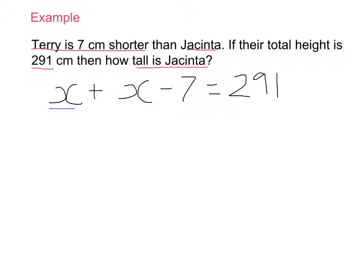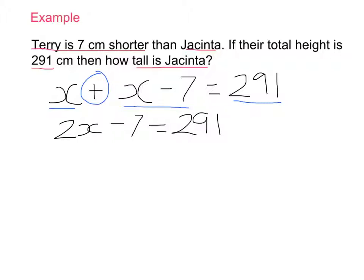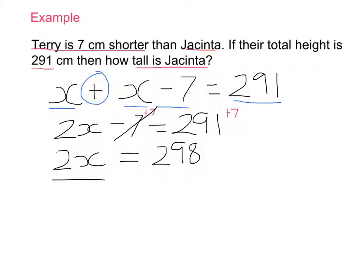Simplifying: X plus X is 2X, so 2X minus 7 equals 291. Add 7 to both sides to cancel it out: 2X equals 298. Divide both sides by 2 — the inverse operation — giving X equals 149 centimetres. Steps followed: read the question, turned information into an equation, simplified and solved it. Now step four: check the solution.